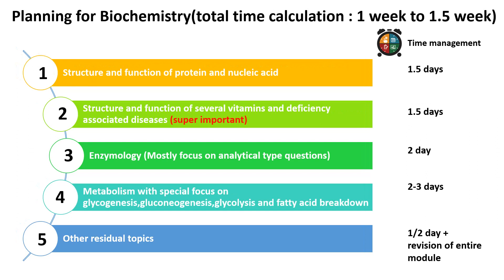In biochemistry, frequently asked topics are structures of proteins, nucleic acids, and sometimes sugars, as well as structure and functions of vitamins. Vitamins are one of the favorite topics of IIT JAM and questions are asked every year. Enzymology is another important topic where easy, scoring questions are asked. Metabolism has huge coverage but the chances of answering a metabolic question are low. Still, touching all metabolism topics is wise, with special focus on glycogenesis, gluconeogenesis, glycolysis, and fatty acid breakdown.